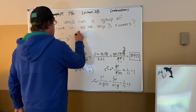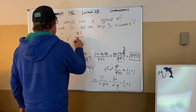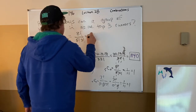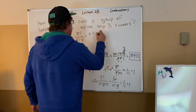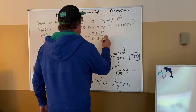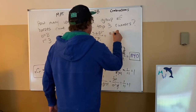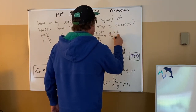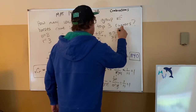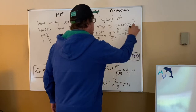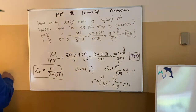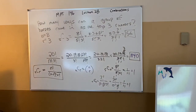Using 8C3: 8 factorial over (5 factorial times 3 factorial). That's 8 times 7 times 6 over 3 times 2 times 1. Divide by 3: 6 and 2. Divide by 2: 3. That gives 56. There are 56 combinations. The big thing is: did you know it was a combination or a permutation? N is 8, R is 3 — a group of 8 trying, 3 will succeed.